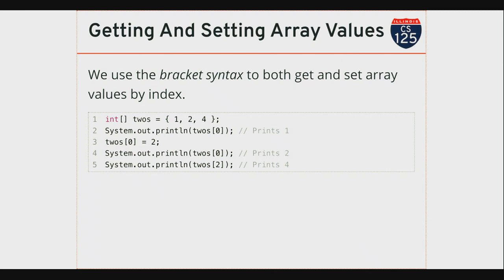This is our first value in the array at index zero. I can also set values in a Java array using similar syntax. On line three I'm modifying the first value in the array — I'm changing it. Originally it was one, and now it's two. I've assigned it to two. This says: assign the value in the array 'twos' at position zero, which is the first value, to be two. Just like with variable assignment, I can assign values into an array using a literal or a variable.